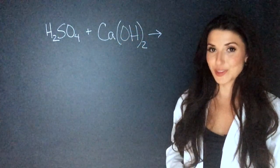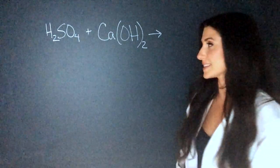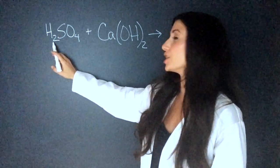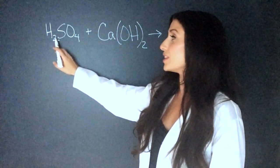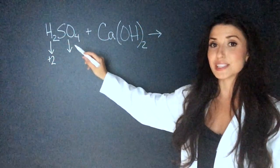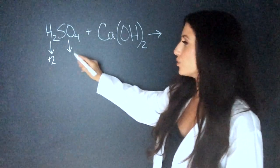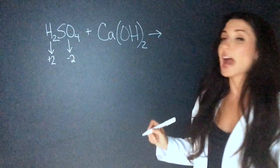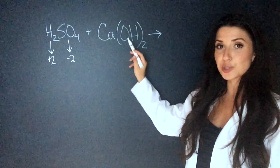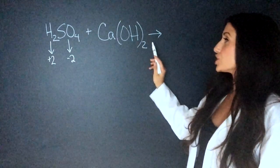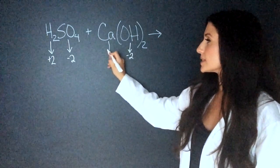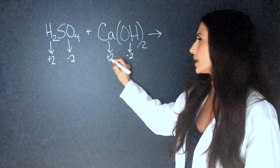The way we're going to find this salt formula is by first looking at the acid — we'll look at the hydrogen. If there was one hydrogen it would have a charge of +1, but there's two hydrogens so I know that the charge here is +2. This molecule is neutral, so I know that SO₄ is -2. Now going over to the base, I look at the OH. If this was one OH group it would be -1, but there's two so I know that this is a charge of -2. And because this is neutral I know that calcium has a charge of +2.